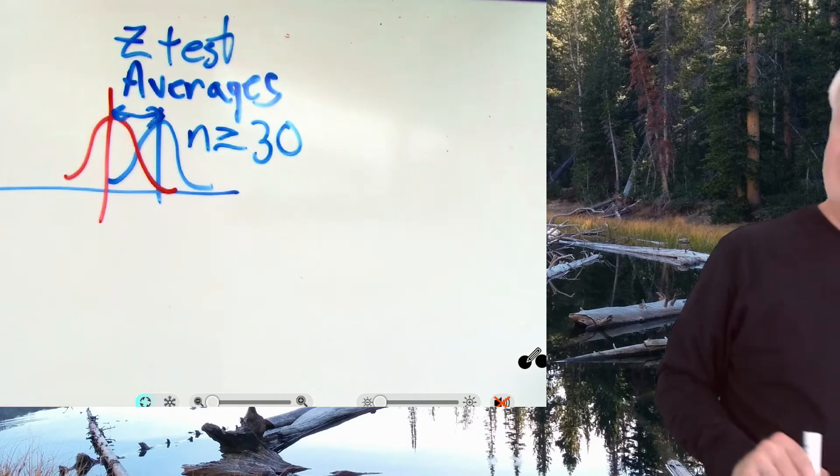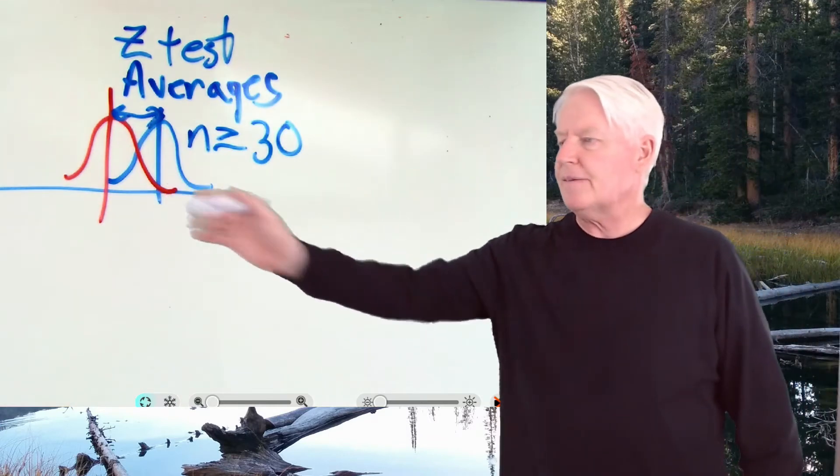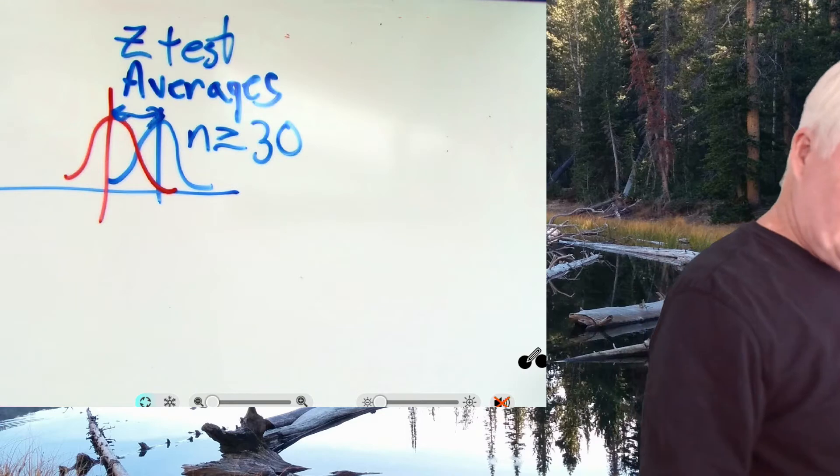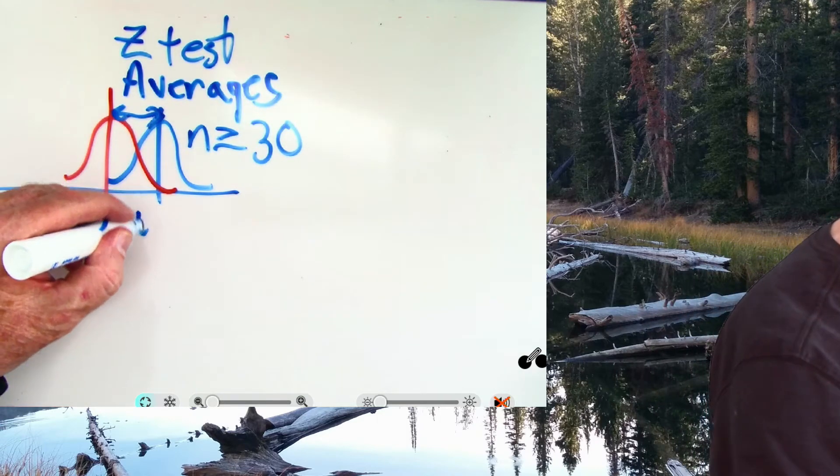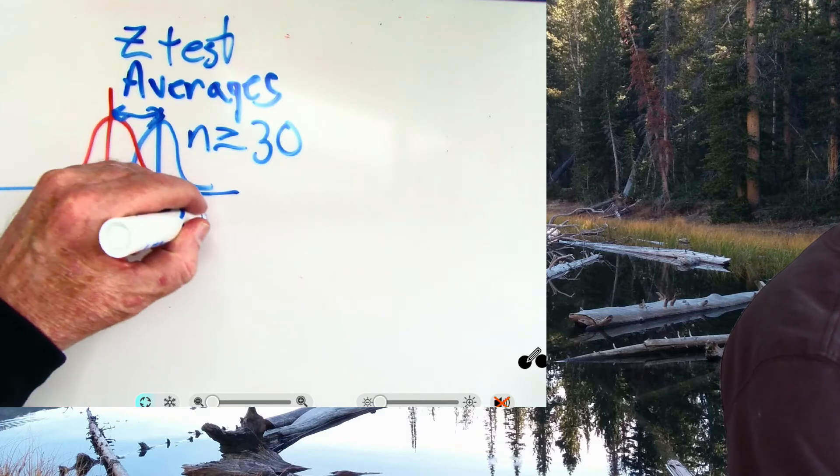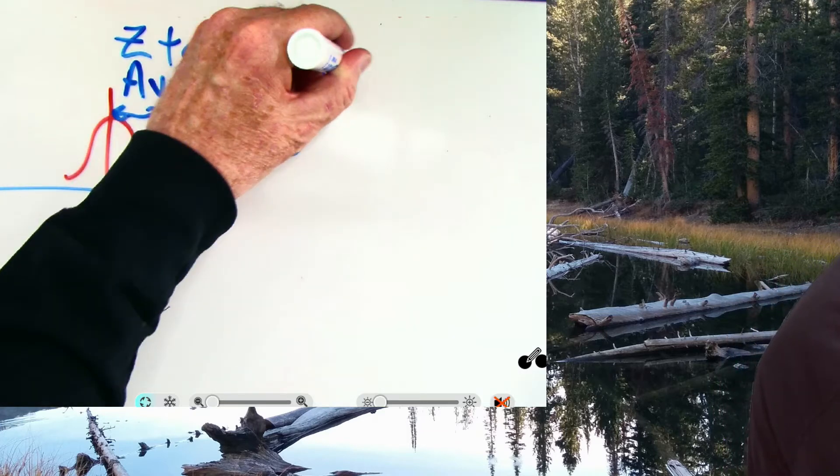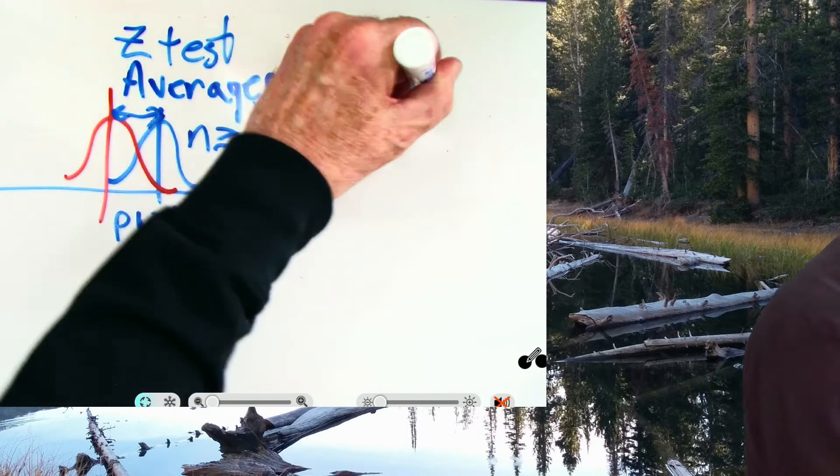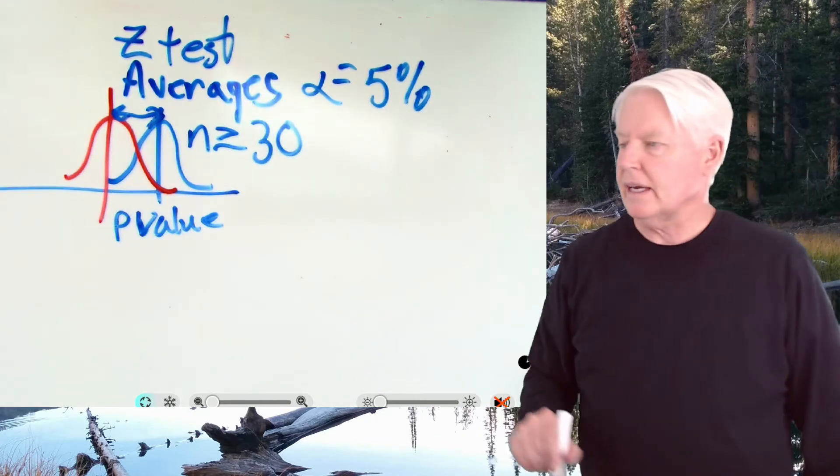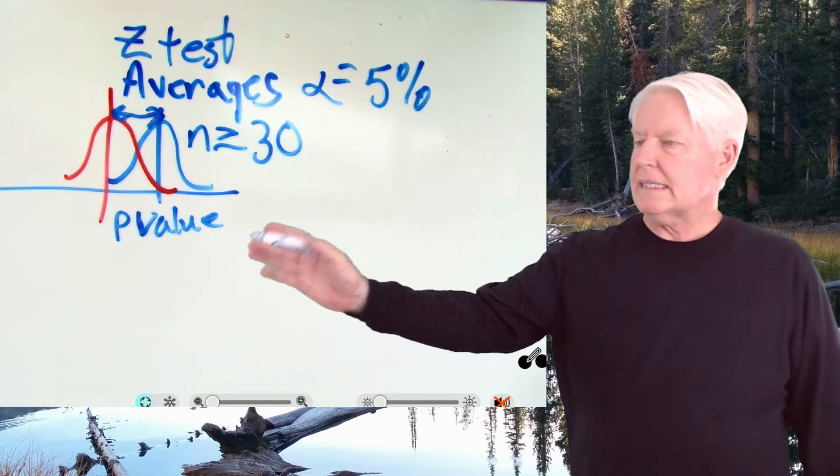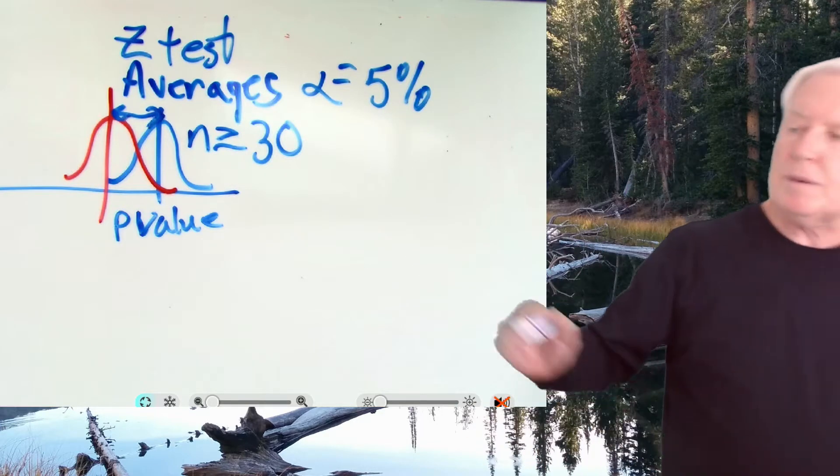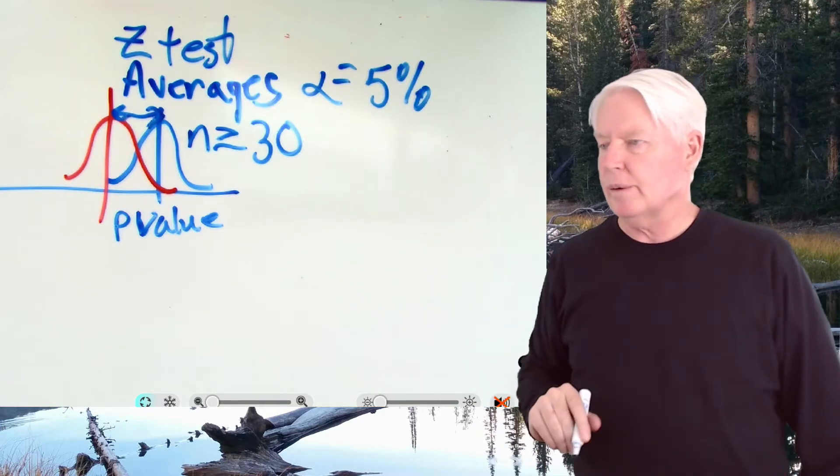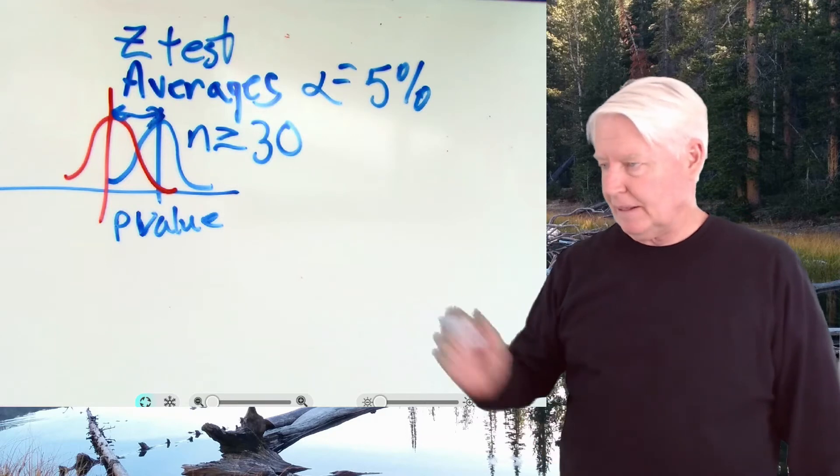If N is greater than or equal to 30, you can use the Z statistic to test to see if the average changed. And of course, we have two values that come out of the test. We have a P value and an alpha risk, which is usually 5%, by the way, usually 5%. And if our P value is less than our alpha risk, it's statistically significant. If the P value is greater than the alpha risk, it's statistically insignificant.